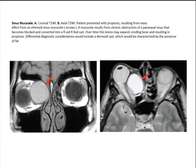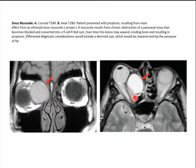For example, here you can see a sinus mucocele resulting in expansion of the sinus, bulging into the orbital cavity, and causing proptosis of the right orbit.